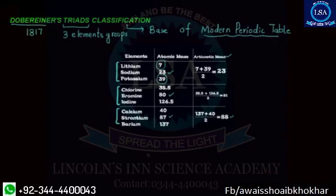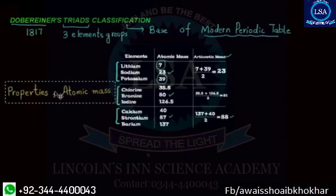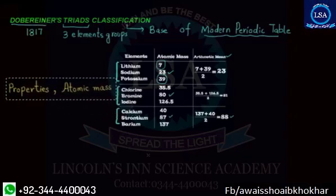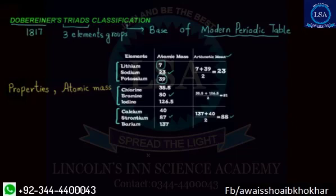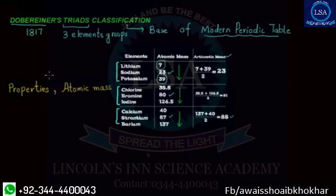So what is the advantage of Dobereiner's Triads? We arrange the elements by increasing atomic mass. For example, 7, 23, and 39 for the first triad; 35.5, 80, and 126.5 for the second; and 40, 87, and 137 for the third. The atomic mass increases in order.